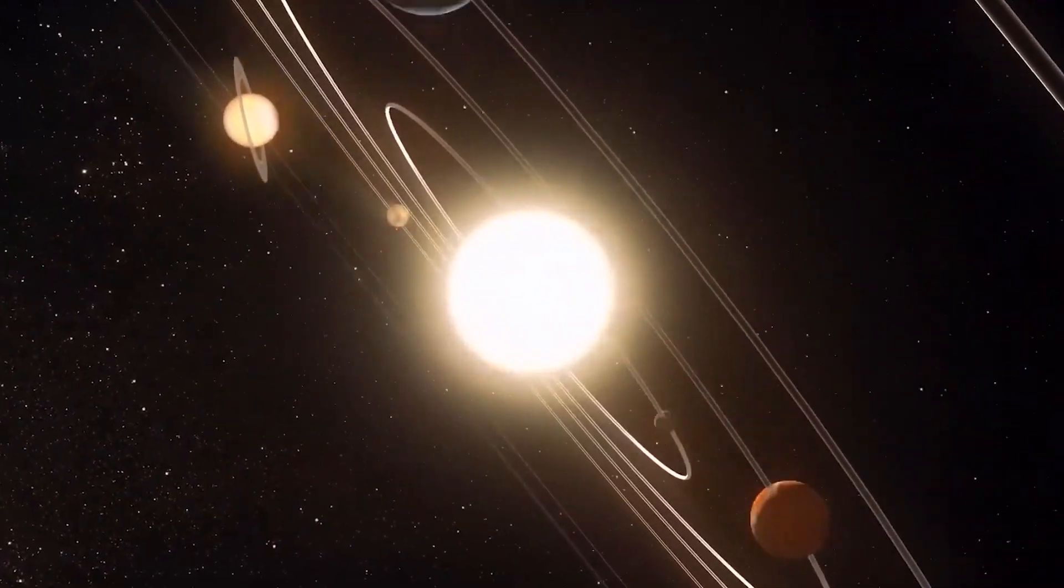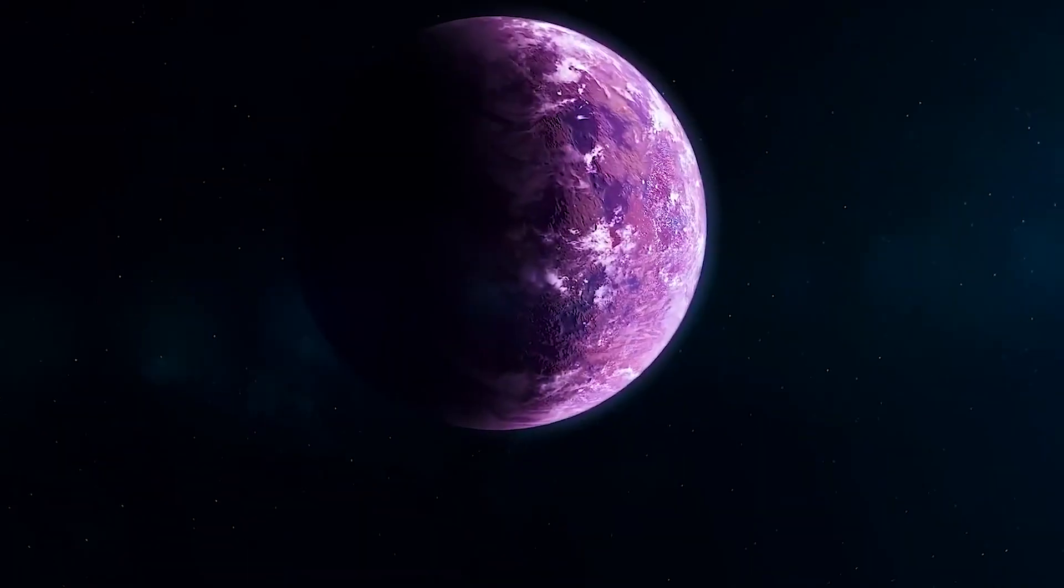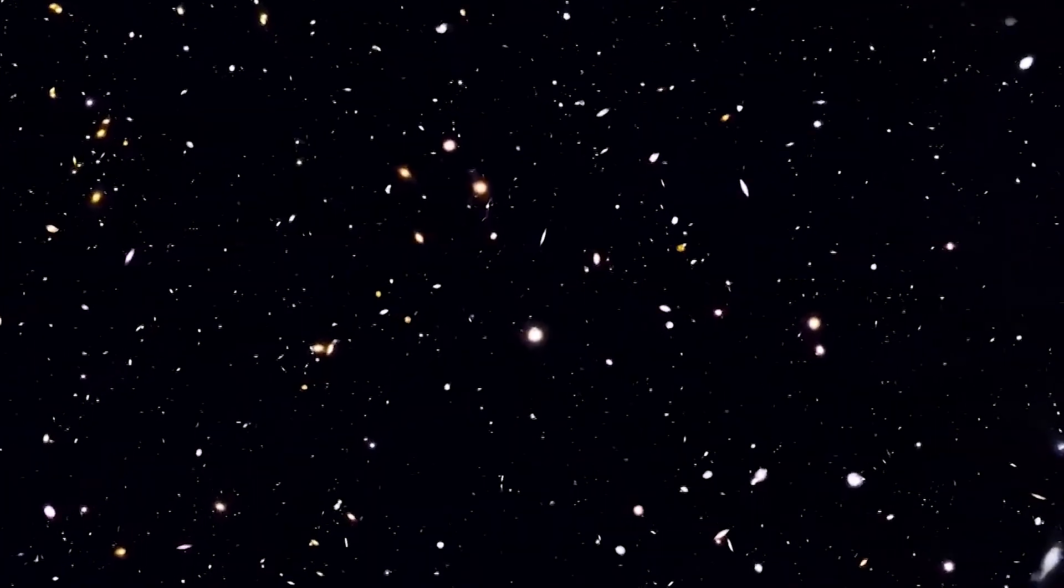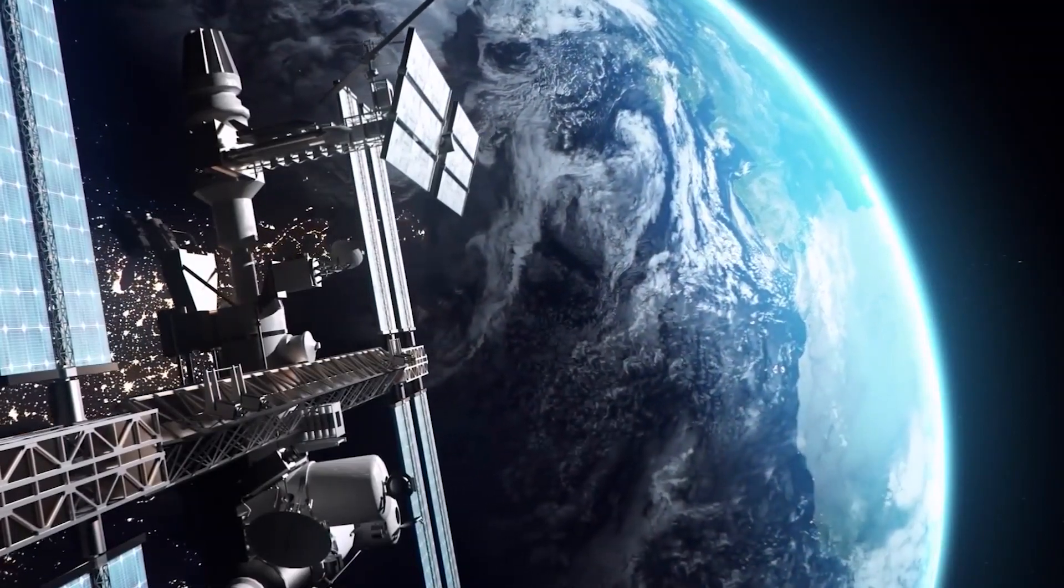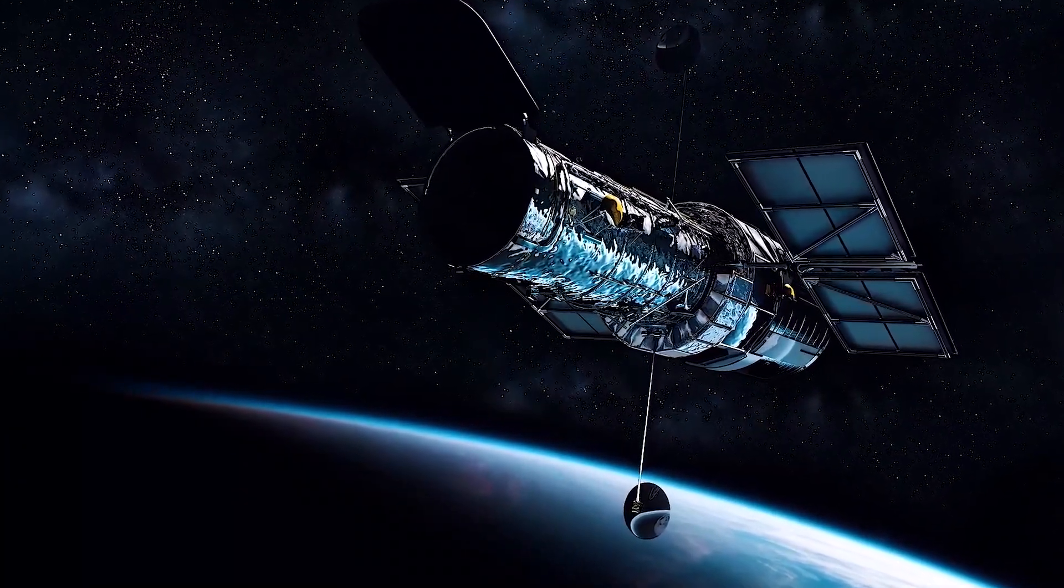Light doesn't travel infinitely fast. That is why when we see objects from across the universe, we're actually looking back in time, as they were when their light left them. It's important to note that the light of distant galaxies travels across billions of years of space and time, and in doing so, it is shifted towards the red end of the electromagnetic spectrum.